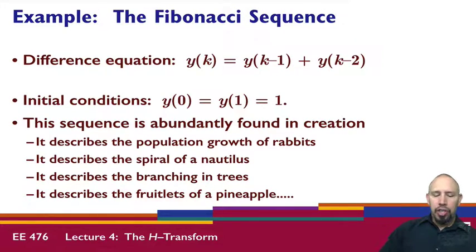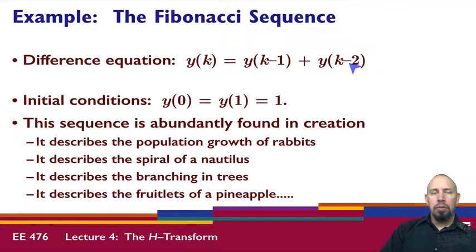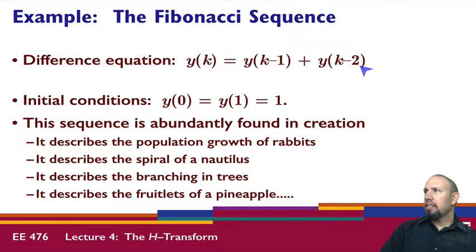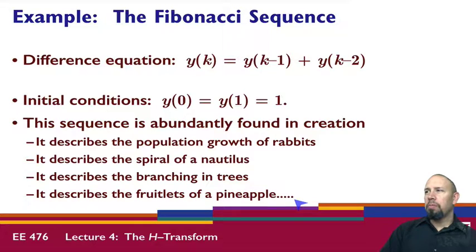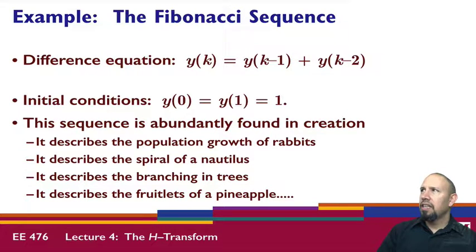Here is a very simple form of the difference equation: y of k equals y of k minus 1 plus y of k minus 2. This particular difference equation defines the Fibonacci sequence, which starts with initial conditions y at zero equals y at one equals one. The Fibonacci sequence is abundantly found in nature — it describes population growth of rabbits, the spiral of a nautilus, branching in trees, fruitlets of a pineapple, and arrangements of seeds in sunflowers.